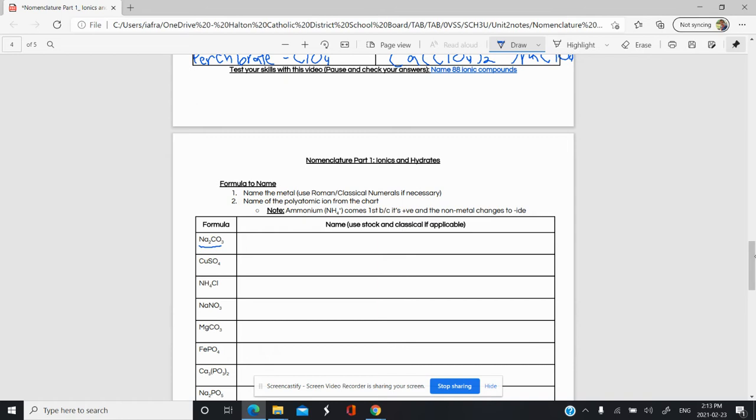Let's start with this first one. We have Na2CO3. That's just a regular sodium ion. CO3 here is one of the five you need to memorize, and that's carbonate. We didn't change any endings. We just named it sodium carbonate.